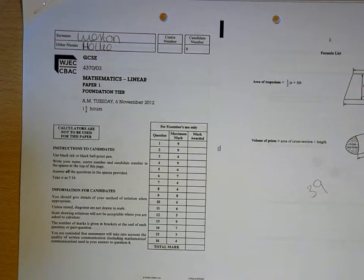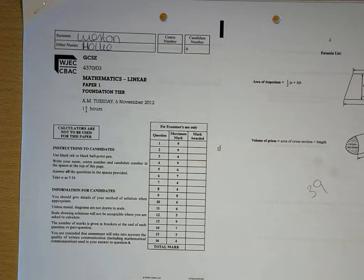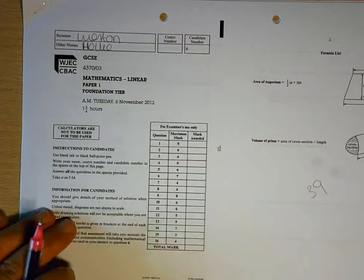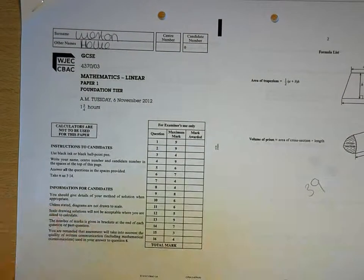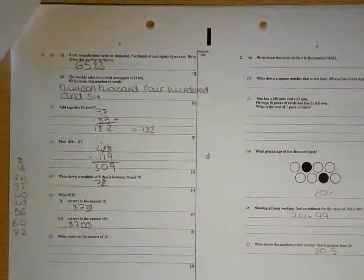Okay Holly, so this is your first go at a foundation tier paper 1. You are predicting a score of around 39. 60 is what you need to be aiming for by May in order to guarantee that grade C, or more than 60. So let's see how close your estimate is to that.